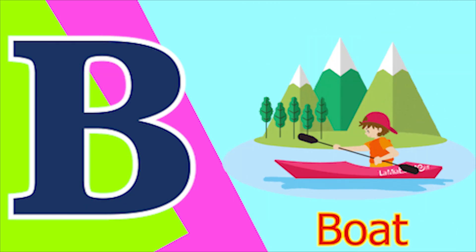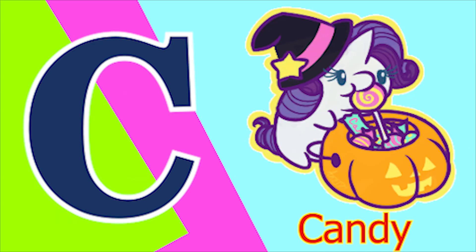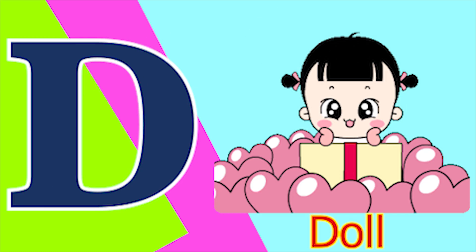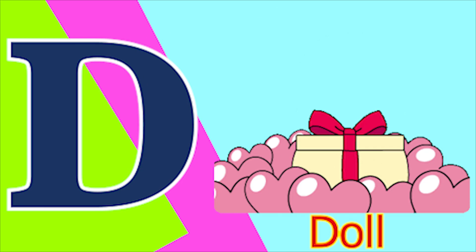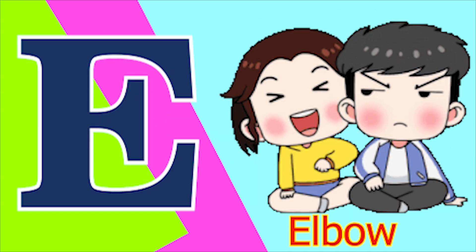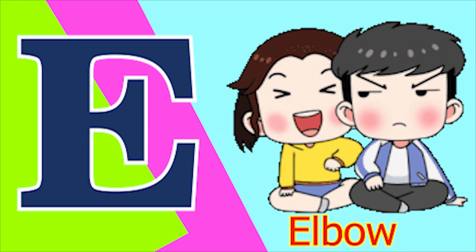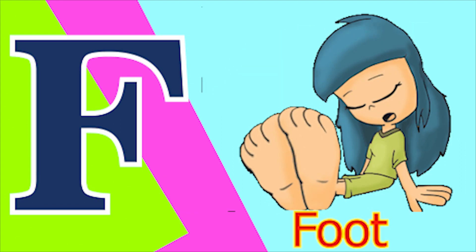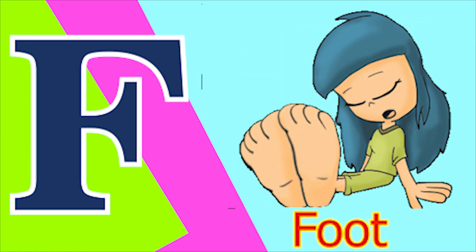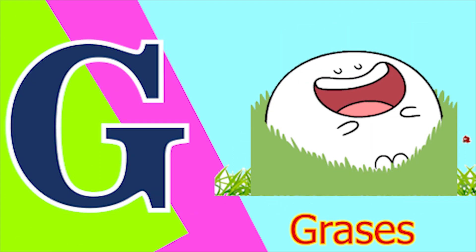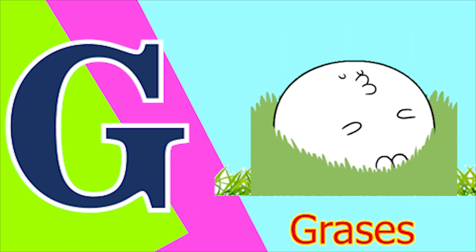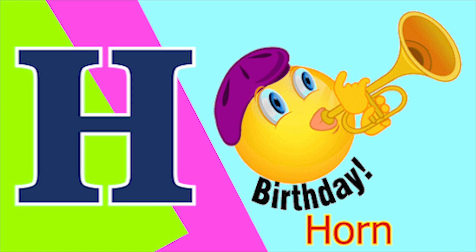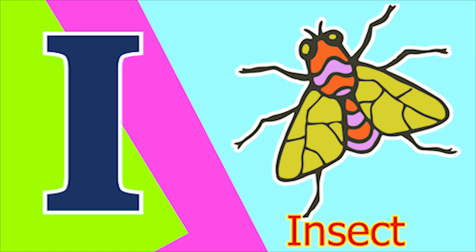A for aeroplane, B for boat, C for candy, D for doll, E for elbow, F for foot, G for glass and H for horn. I for insect.